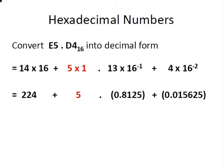Now get the calculators out. 13 by 16 to the power of minus 1—that's essentially 13 divided by 16—is 0.8125. And lastly, 4 by 16 to the power of minus 2, that's 4 divided by 16 squared, or 4 divided by 256, which is 0.015625.